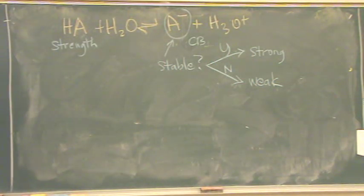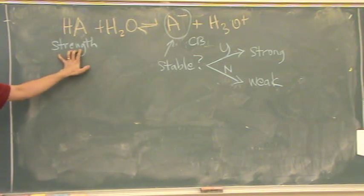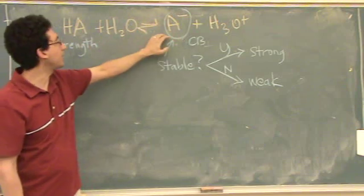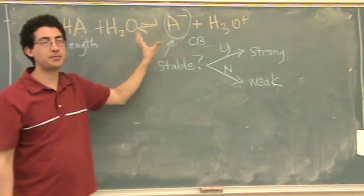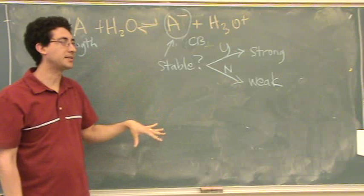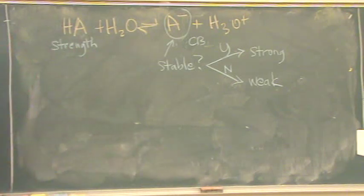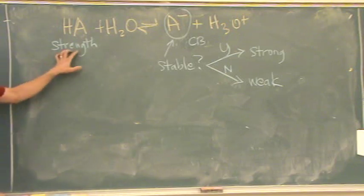Let me explain this. If this is a strong acid, it goes to the right very easily. Goes to the right, it donates a lot, making products stable. Whenever something goes to the right, the products are stable. If it goes to the left, the reactants are stable. We want this to be strong, it donates a lot.